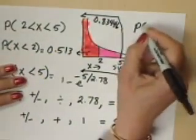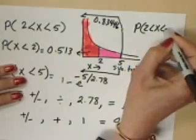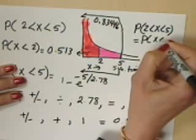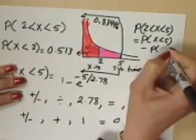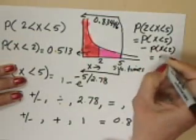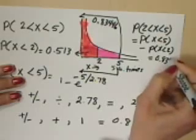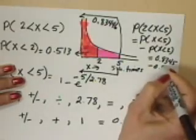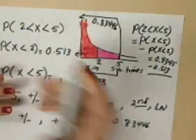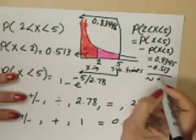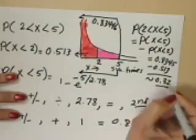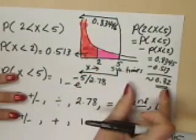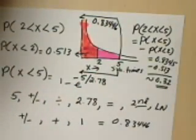So this area right here between 2 to 5 would have to be the difference between these two numbers. So probability that x is between 2 and 5 is equal to probability that x is less than 5 minus probability that x is less than 2. And those numbers are 0.8345 minus 0.513, and that answer is approximately 0.32. So the probability that x would be between 2 to 5 minutes is 0.32 or 32% chance of that. Thank you.